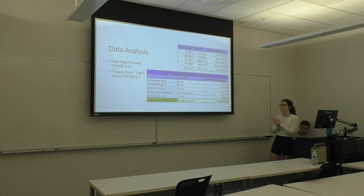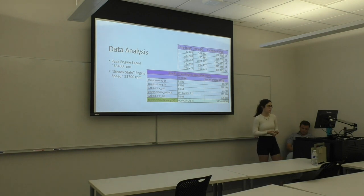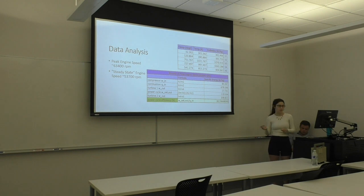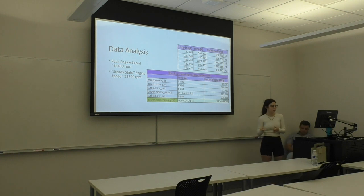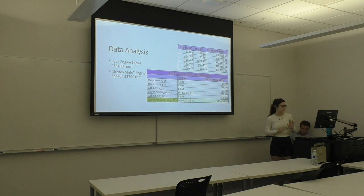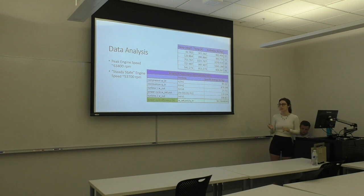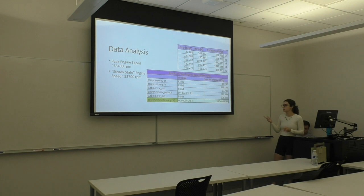As far as how I analyzed this data: since the fluid we were working with was air, I mainly used air tables to grab the enthalpies at each stage, since we're dealing with a cycle. I grabbed enthalpies at stages 1, 2, 3, 4, and 5, in between the compressor and turbines. With that, I was able to calculate the power cycle efficiency for turbine 2. I did this at the peak engine speed — for our case, that was right before we shut off at the very end, at about 63,400 RPM — and also at steady state at about 53,000 RPM. The efficiency came out to be about 30%, which is pretty much what we expected.